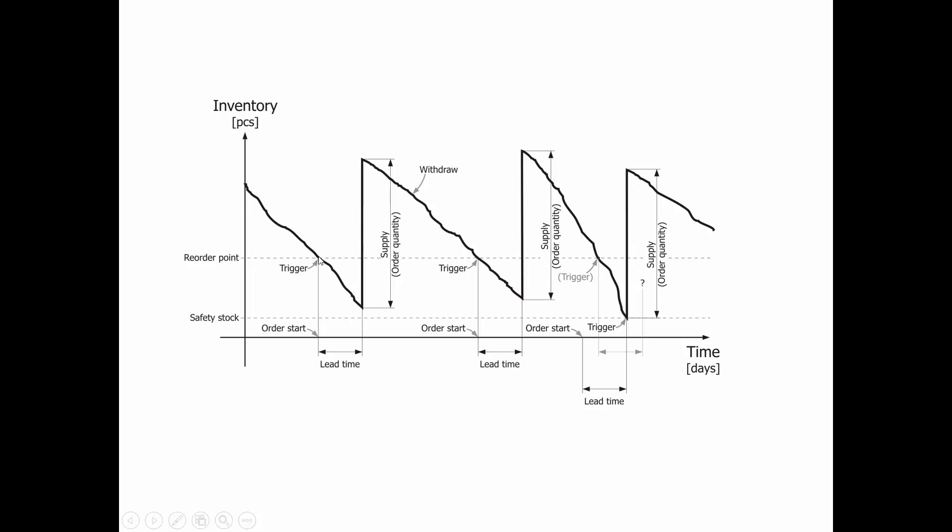And when we trigger the reorder point, it will create a forward planned order. Production order if it's a production item, of course, purchase order if it's a purchase item, etc. And after the lead time, the quantity will get to stock and fulfill my inventory with my order quantity, so the reorder quantity.